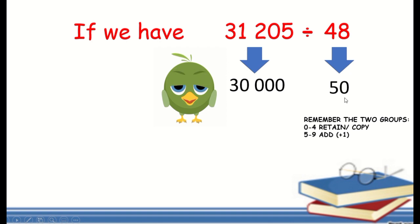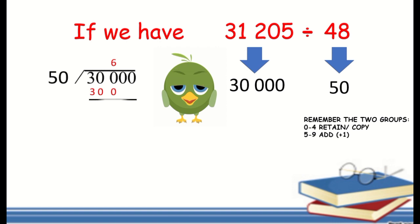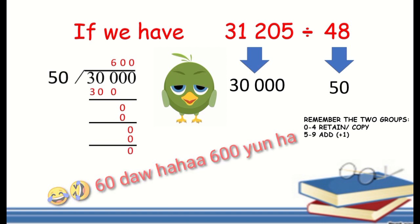So we have the equation 30,000 divided by 50. Using the long method: 300 divided by 50 is 6; 6 times 50 is 300; 300 minus 300, bring down 0. After completing the long division, we get a quotient of 600.